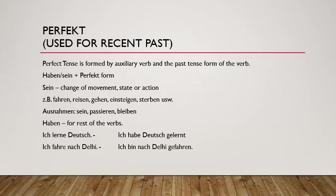Let's understand how to form the past participle. 'Ich lerne Deutsch' — I learn German. 'Lernen' is the verb which is not showing any change in movement, state, or action, so it will take 'haben'. The auxiliary 'haben' is conjugated according to the subject and placed at the second position. So it becomes: 'Ich habe Deutsch gelernt.' The past participle 'gelernt' goes at the end of the sentence.